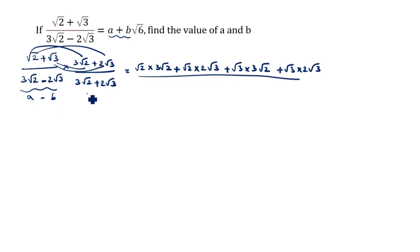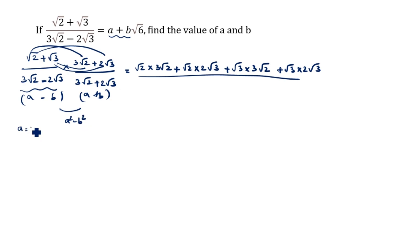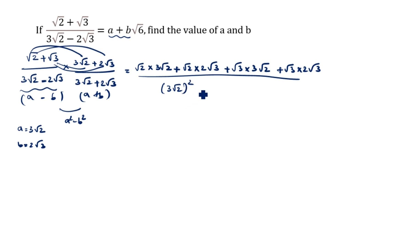In the denominator, we have a minus b multiplied by a plus b, which gives us the formula a squared minus b squared. Here, a is equal to 3 root 2 and b is equal to 2 root 3. So a squared is (3 root 2) squared and b squared is (2 root 3) squared.